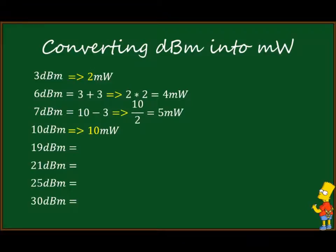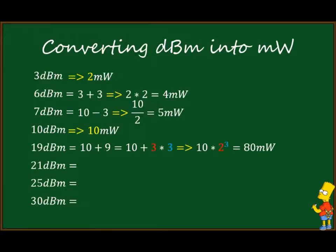7 dBm = 10 − 3, which converts to 10 / 2 = 5 milliwatts. For 19 dBm: 19 = 10 + 9, and 9 = 3 + 3 + 3, which becomes 2 × 2 × 2 = 2^3. Or more directly, 19 = 10 + 3 + 3 + 3, converting to 10 × 2^3. Be careful: only the base is converted, not the exponent.